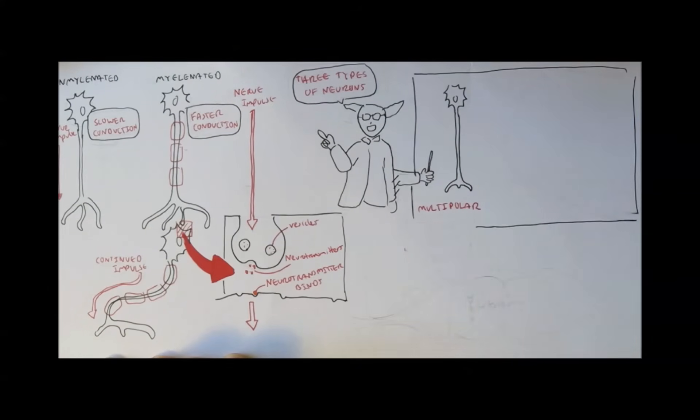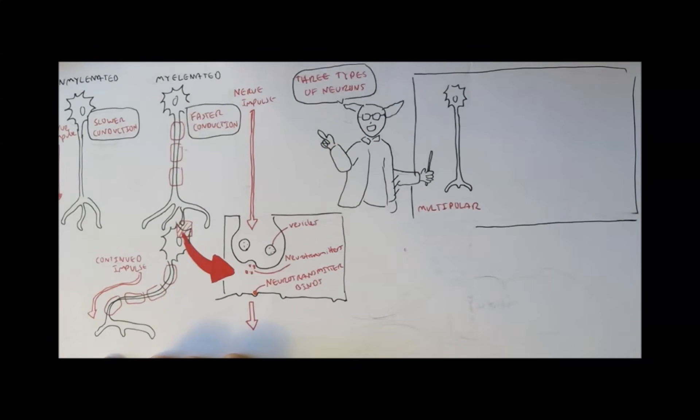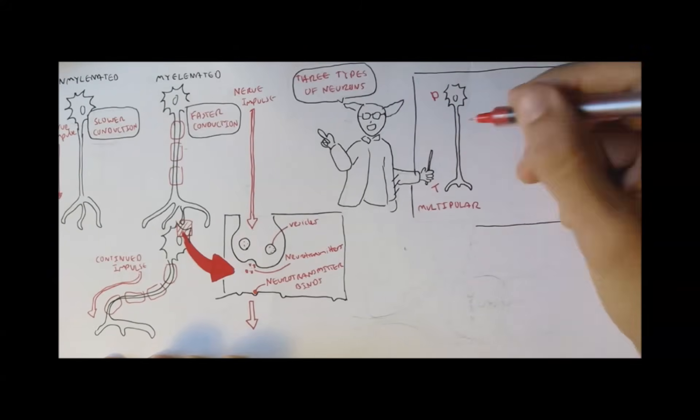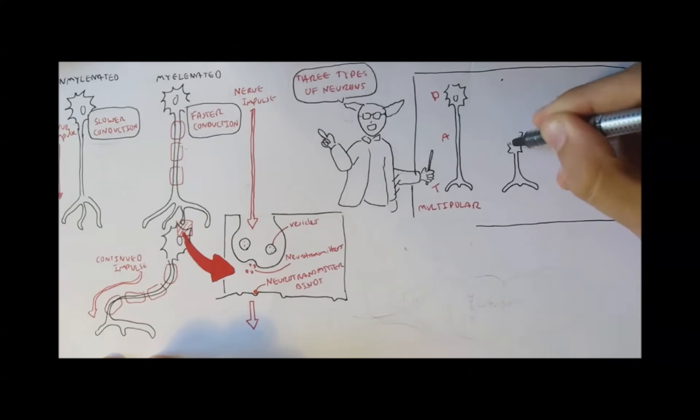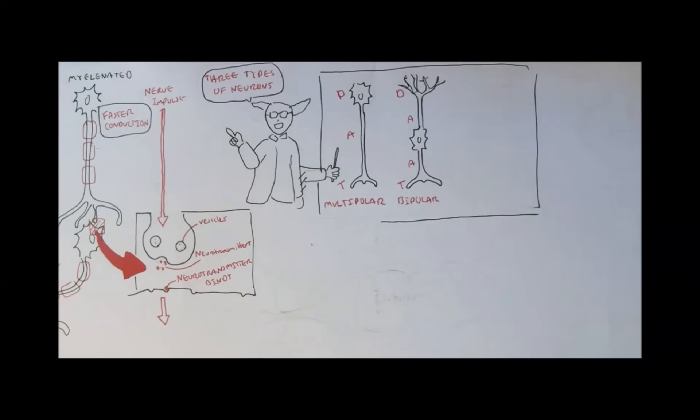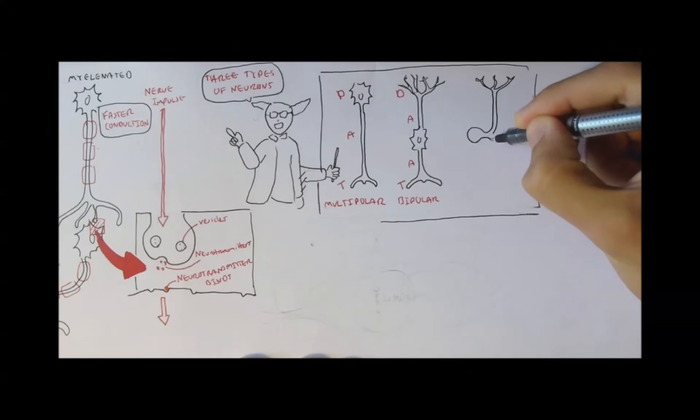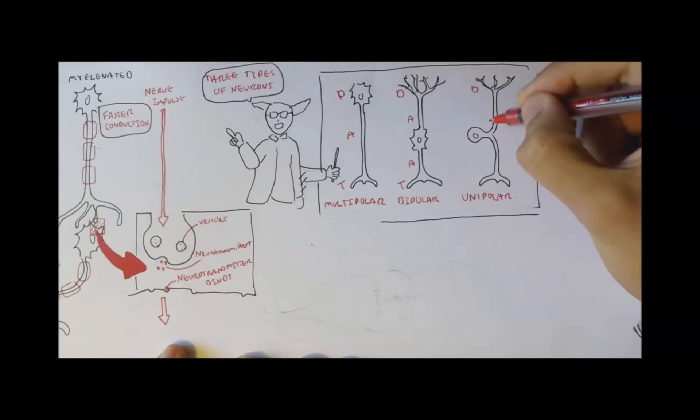There are three types of neurons. There is a multipolar, and D, A, and T stands for dendrites, axon, and terminal. There is also the bipolar neuron, and there is a unipolar neuron with the soma in the middle.